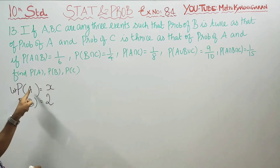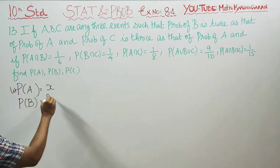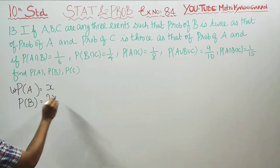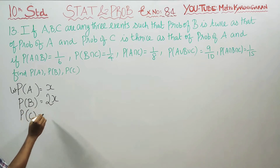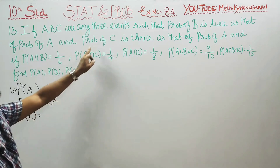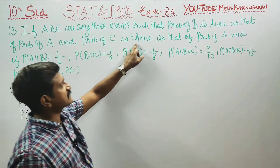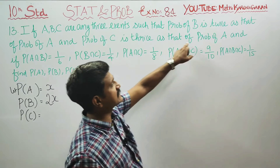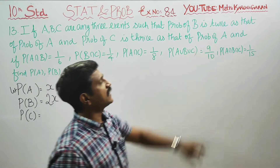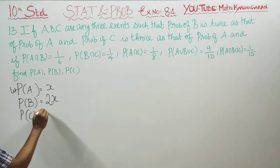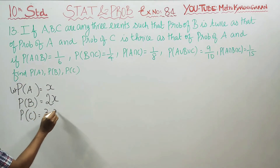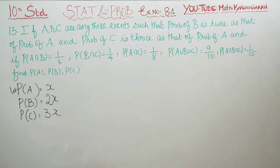Let probability of A be X, then probability of B is 2X. Probability of C is thrice that of probability of A, so probability of C is 3X.